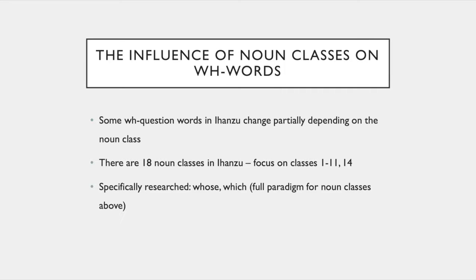Now for my focus: the influence of noun classes on WH words. Some question words change partially depending on the noun class — they are marked for the class. There are 8–9 classes in Ihanzu, but my focus is only on classes 1 to 11 and 14, as those are the ones Andrew gave me at the beginning — I guess those are the ones with the safest input. I specifically researched 'whose' and 'which', so I have a full paradigm for these classes for these types of words.